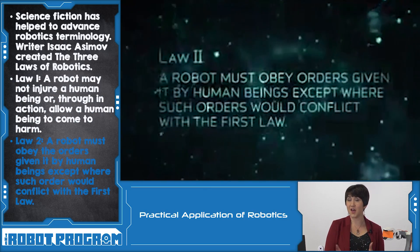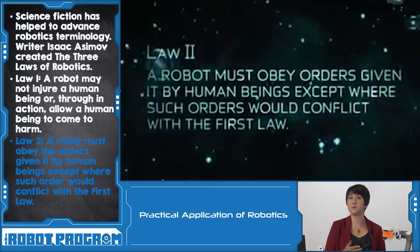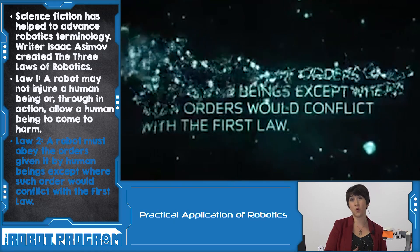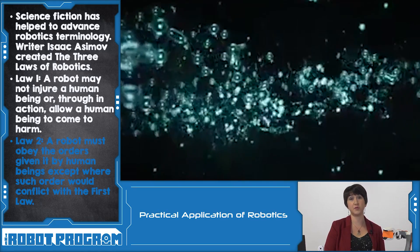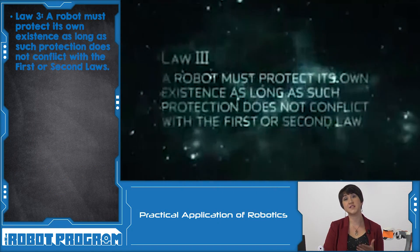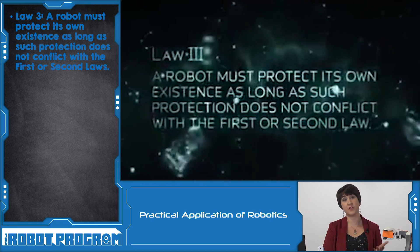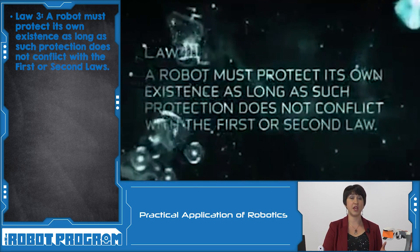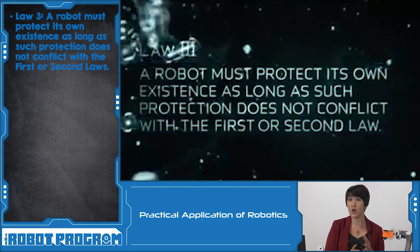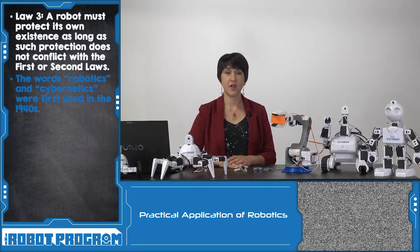The second law is that a robot must obey orders given to it by a human being, unless those orders would conflict with the first law. The third law is that a robot must protect its own existence, unless that conflicts with the first two laws — in which a robot has to take commands from a human or not cause harm to come to a human being or humanity.